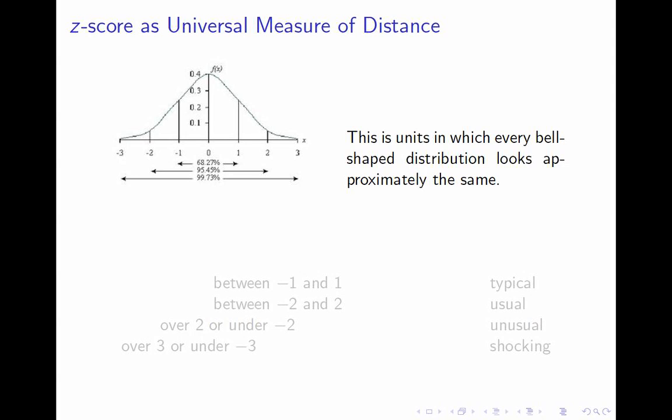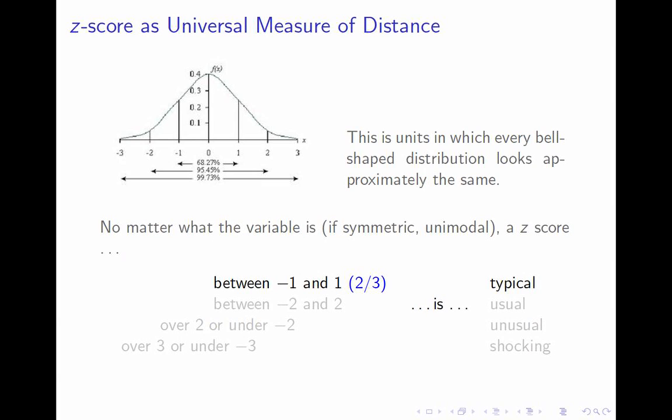What does that mean? That means that no matter what, about two-thirds of the data has a z-score between minus one and one. So that would be typical. It's a woman who's not particularly tall or not particularly short. The middle two-thirds of all women have z-scores in that range.